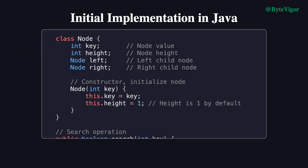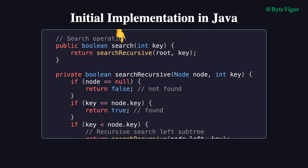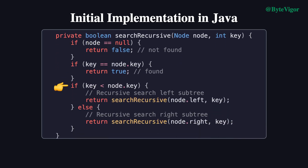Now let's take a quick look at a basic Java implementation of an AVL tree. Today we'll focus on node definition and search operations, leaving insertion and deletion for a future discussion. In the code, we define a node class with four properties: key, height, left, and right. Each node stores its height, initialized to 1, which is used to calculate the balance factor and determine whether the tree is balanced. The search method is implemented recursively—it compares the current node's value with the target value, then decides whether to search the left or right subtree, continuing until the target is found or not.